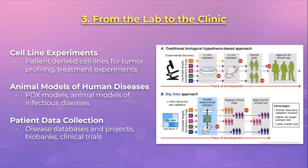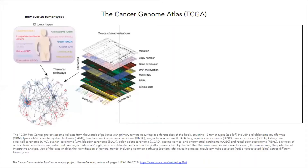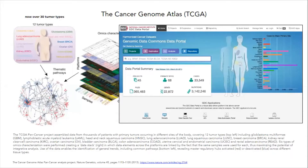Finally, we learned about the process of how discoveries in the lab lead to real-life applications. Here, we mainly explored three topics: cell line experiments, animal models of human diseases, and how they offer a rich collection of data to inform diagnosis and treatment of cancer in patients. We also discussed some of the main projects carried out, for example, the Cancer Genome Atlas, which aims to explore the entire spectrum of genomic changes involved in human cancer.